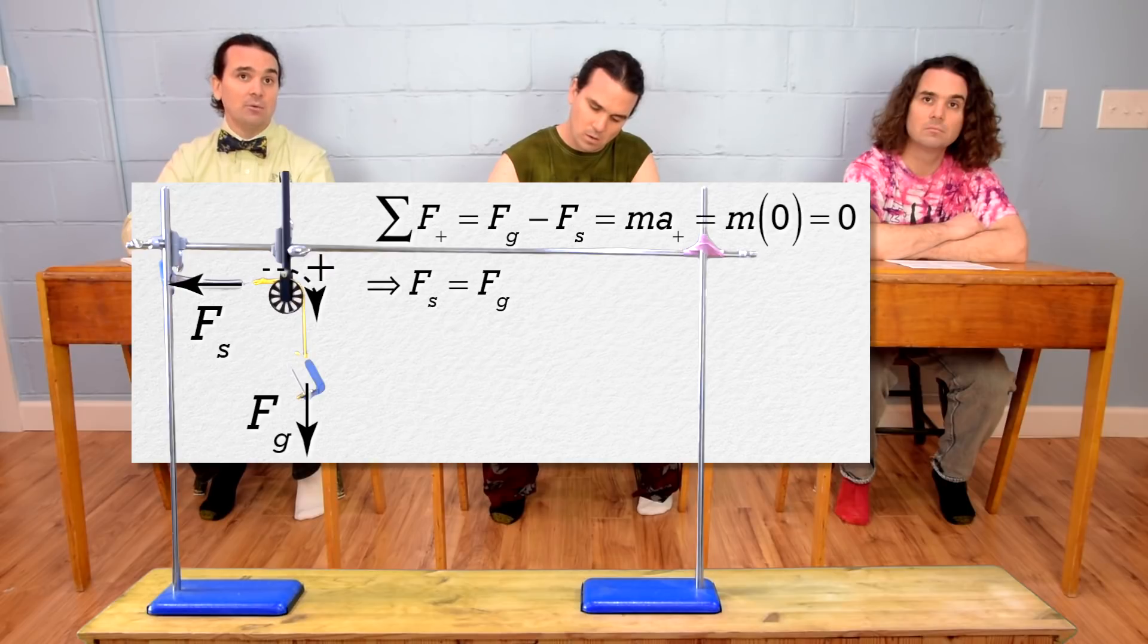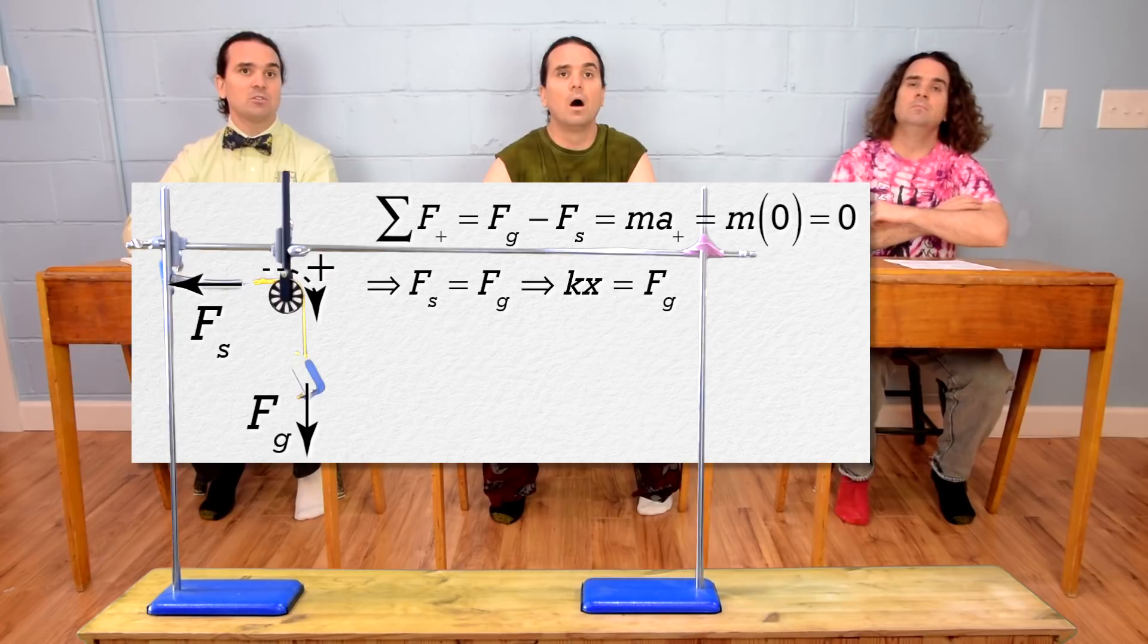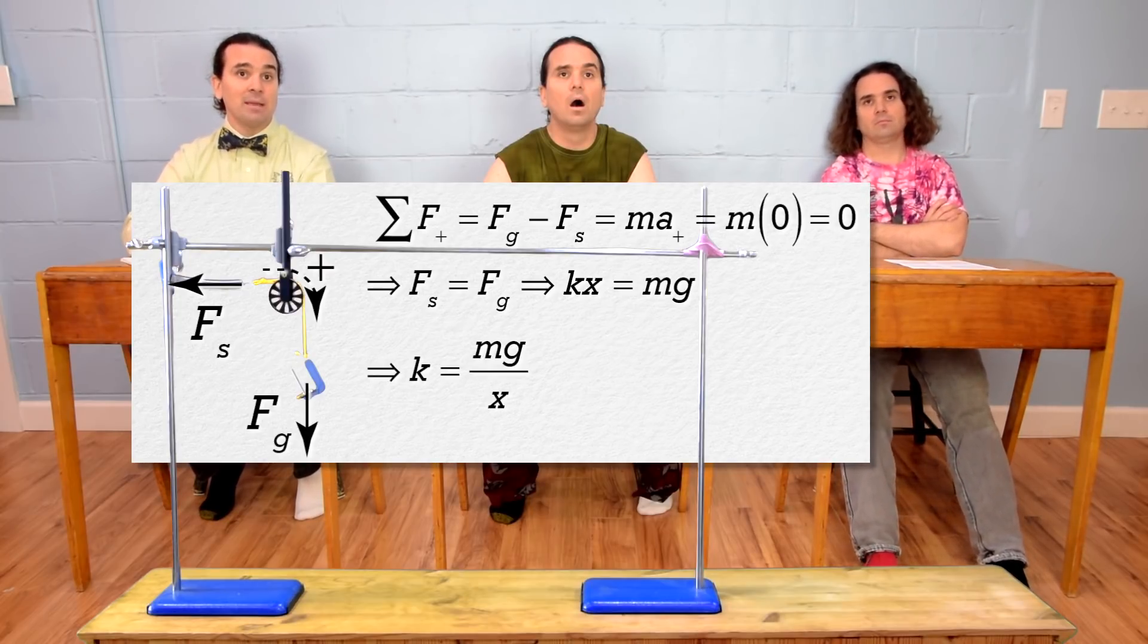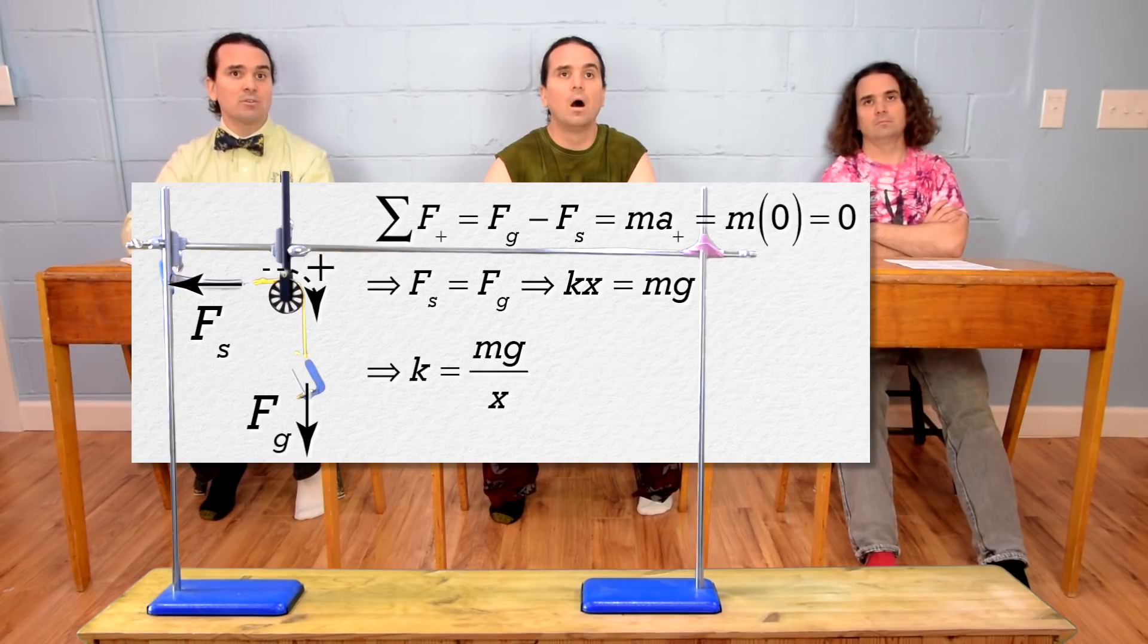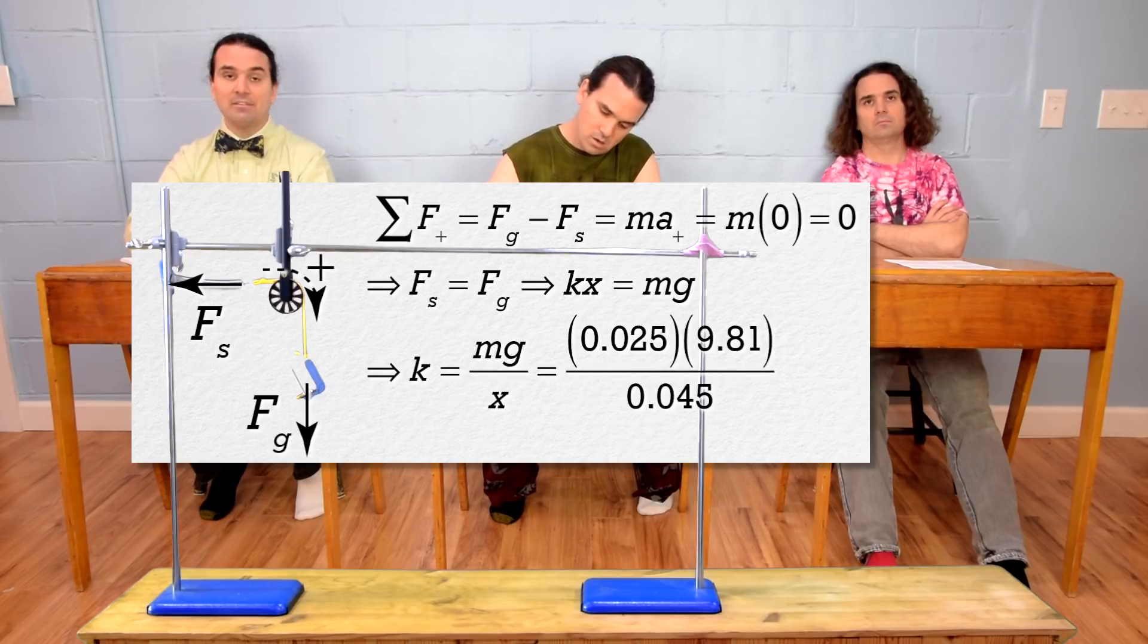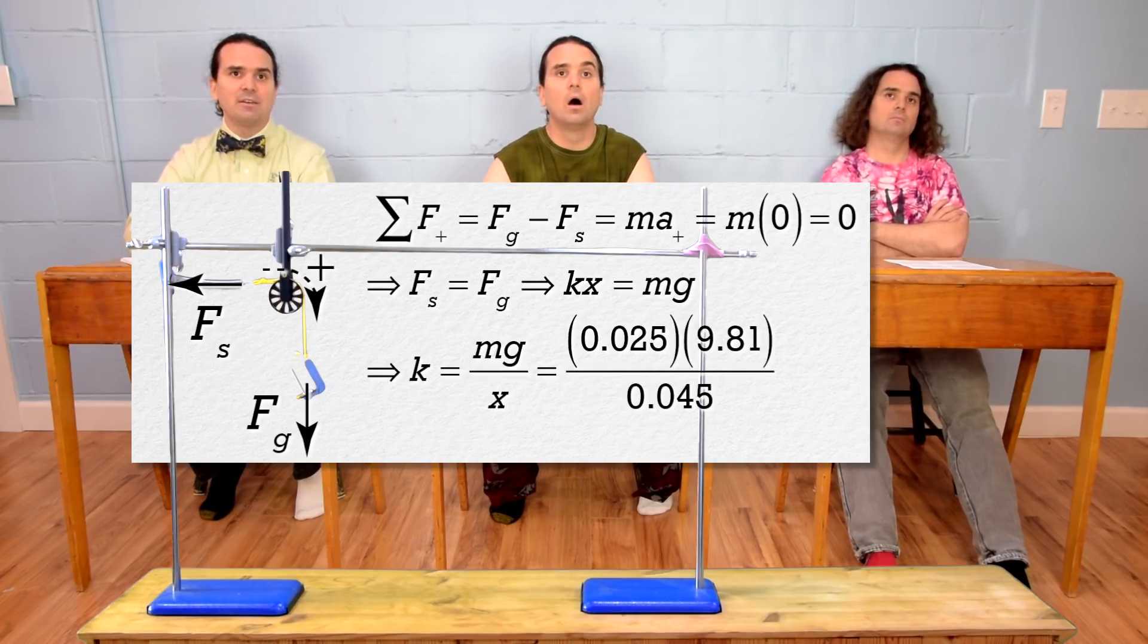so the force of the spring equals the force of gravity. We can substitute in the magnitude of the spring force equation, which is the spring constant times the displacement from rest position. We can also substitute mass times acceleration due to gravity in for the force of gravity. Solve for the spring constant and substitute in numbers and we get 0.025 kilograms times 9.81 meters per second squared divided by 0.045 meters.